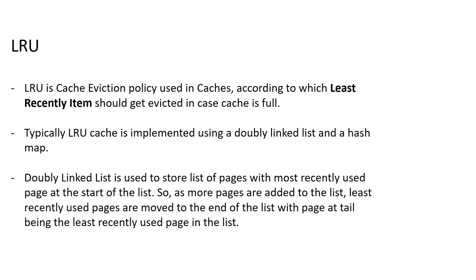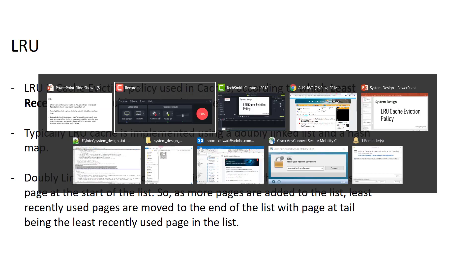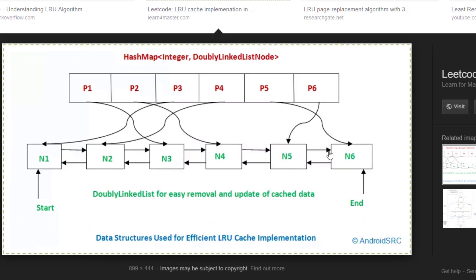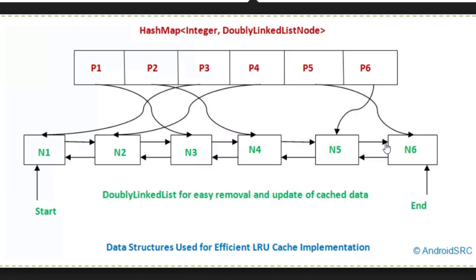The important thing is how we can implement LRU. LRU is implemented using a doubly linked list and a HashMap. Let's say this is a HashMap and this is a doubly linked list. Let's take an example of the cache — this doubly linked list represents the cache size.